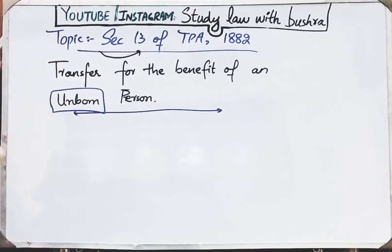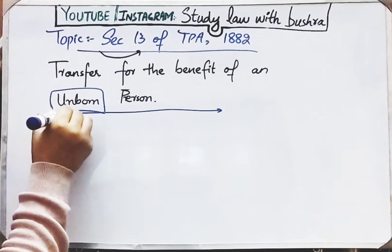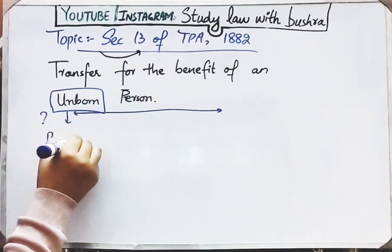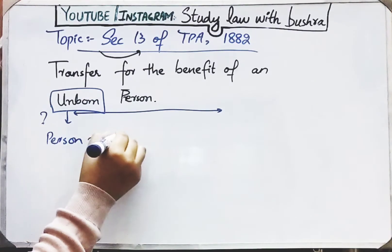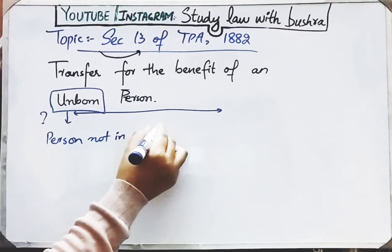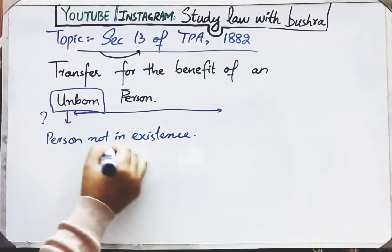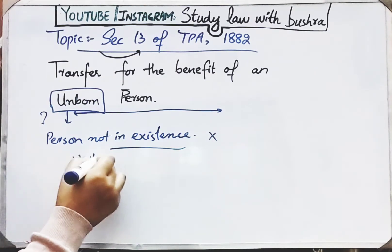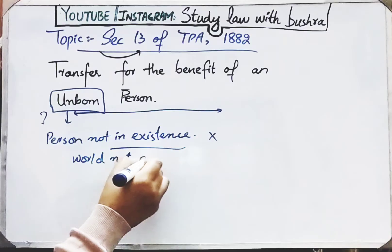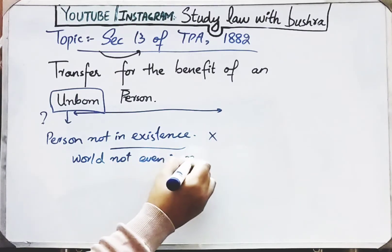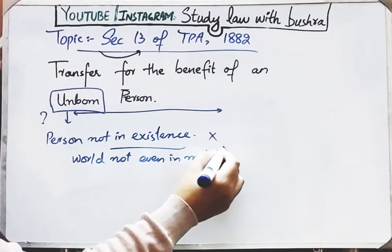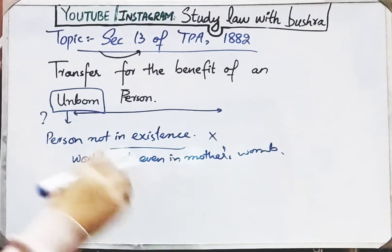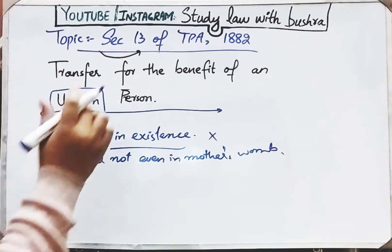An unborn person means a person who is not in existence — a person whose existence is nothing, who has not yet come into this world, who is not present. The one who is not living, and the one who is not even in the mother's womb. So if there is a person who has no existence at all, how will you transfer property to them?